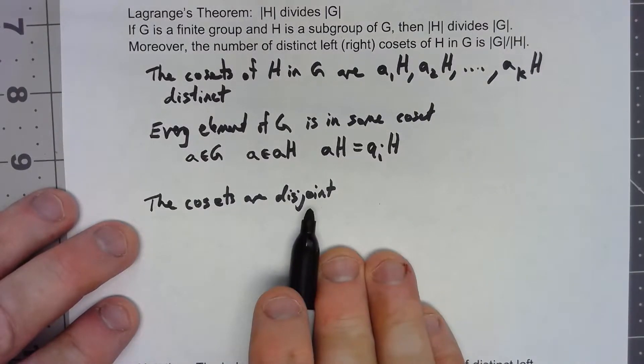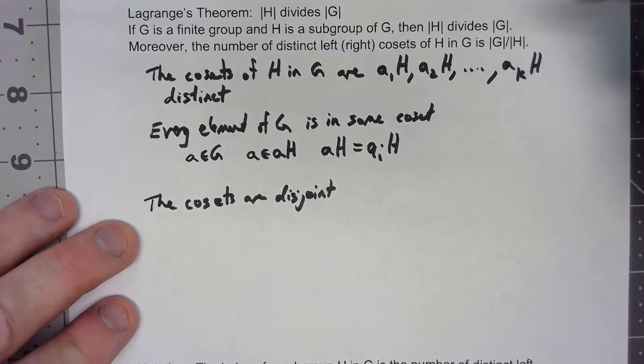Further, the cosets being disjoint, that's what we just proved in those things.